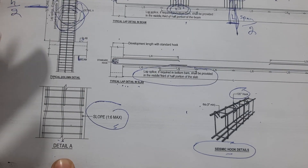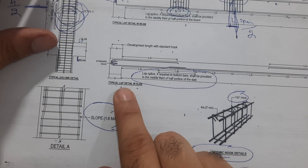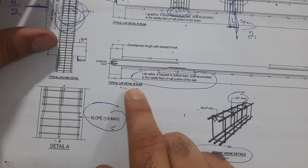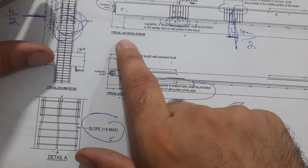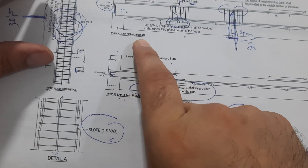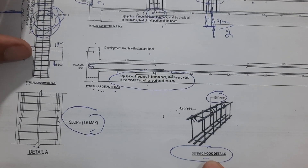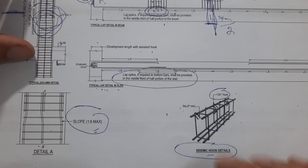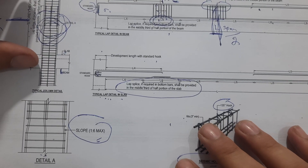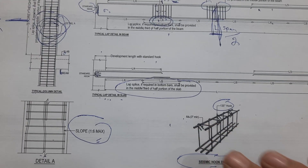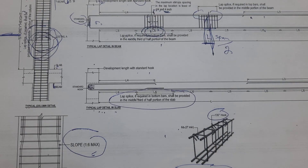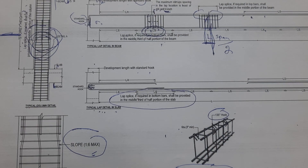This is Detail A especially for the column. Next, typical lap detail in slab, typical lap detail in beam, and seismic hook details. Thanks for watching — see you in the next video. Goodbye.